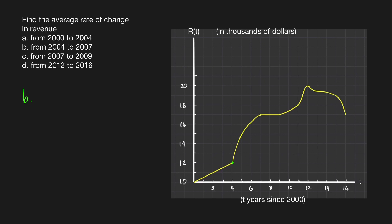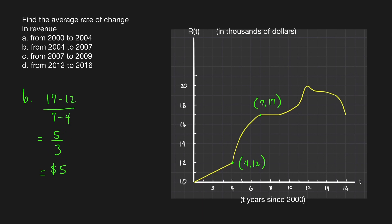For 2004, the coordinates of this point are (4, 12), and for 2007, we have the point (7, 17). The average rate of change is the slope of the line that passes through those two points: 17 minus 12 all over 7 minus 4, which is equal to 5 over 3. The numerator is in thousands of dollars and the denominator is in years, so this is $5,000 over 3 years, which equals $1,666.67 per year. This is the average rate of change during that period.